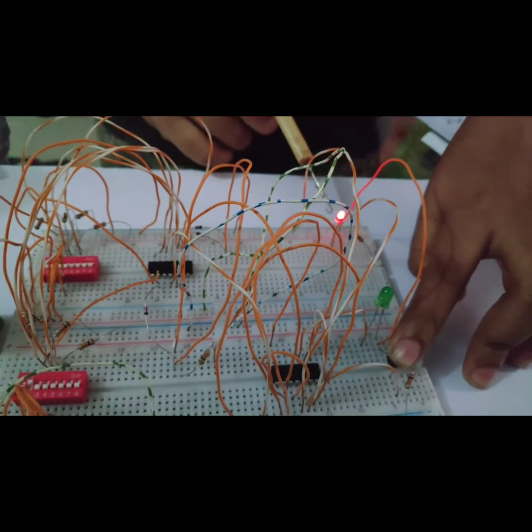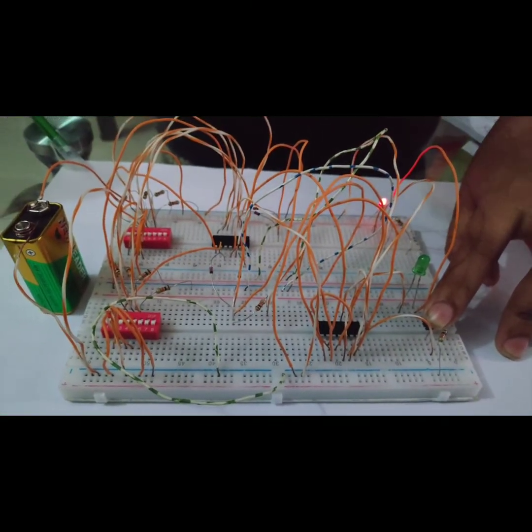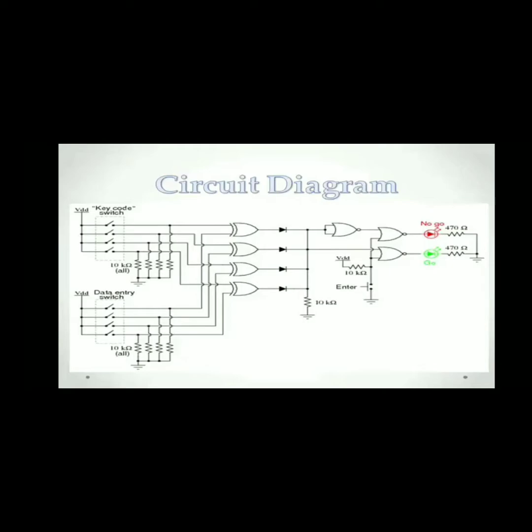Now the circuit diagram will be described by our group member Ahmadul Haqfahim. Hello guys, my name is Ahmadul Haqfahim. I'm going to describe you the circuit diagram of our 4-bit password security system. First of all, we take four switches as key code switch and other four switches as data entry switch.